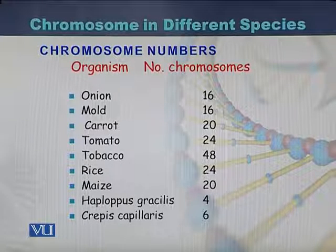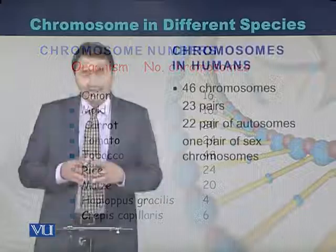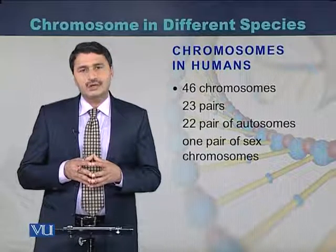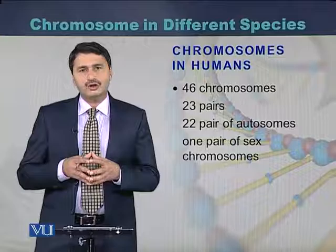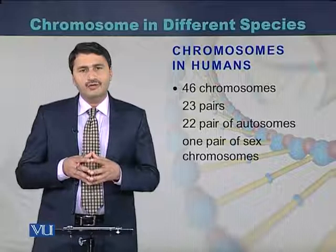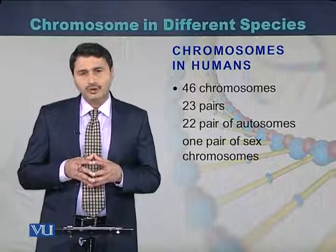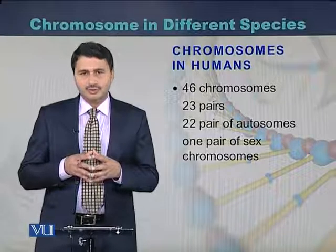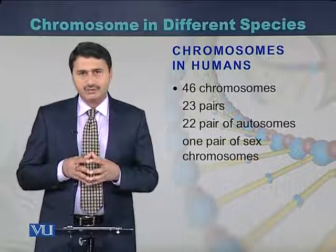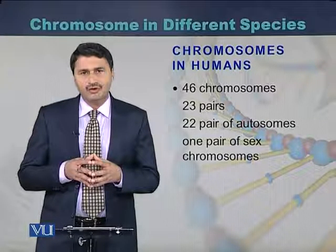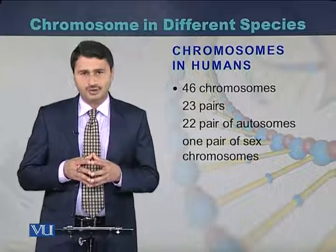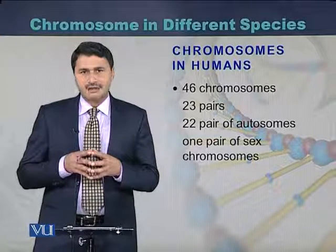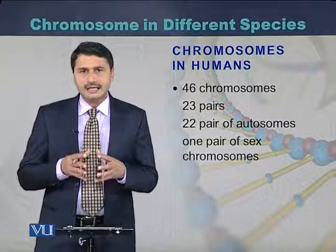Looking at chromosome numbers in different plants: onion has 16 chromosomes, mold also has 16, carrot has 20, tomato 24, tobacco 48, rice has 24 chromosomes, and maize 20.